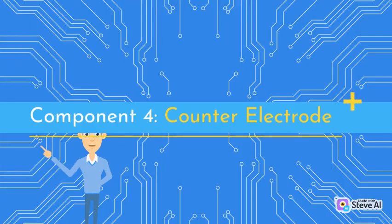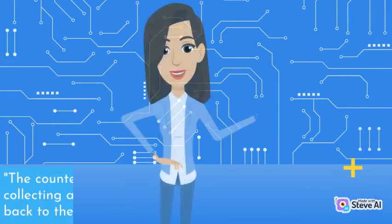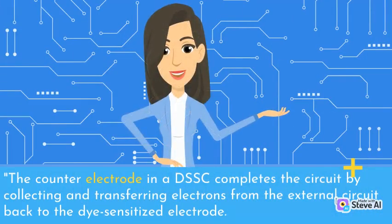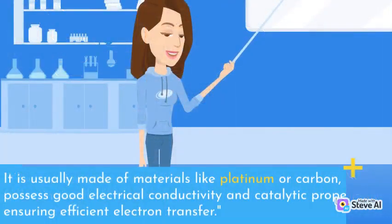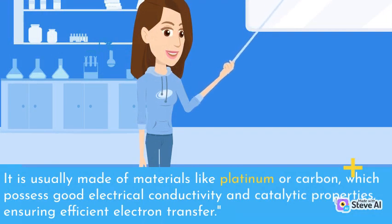Component 4: Counter-electrode. The counter-electrode in a DSSC completes the circuit by collecting and transferring electrons from the external circuit back to the dye-sensitized electrode. It is usually made of materials like platinum or carbon, which possess good electrical conductivity and catalytic properties, ensuring efficient electron transfer.